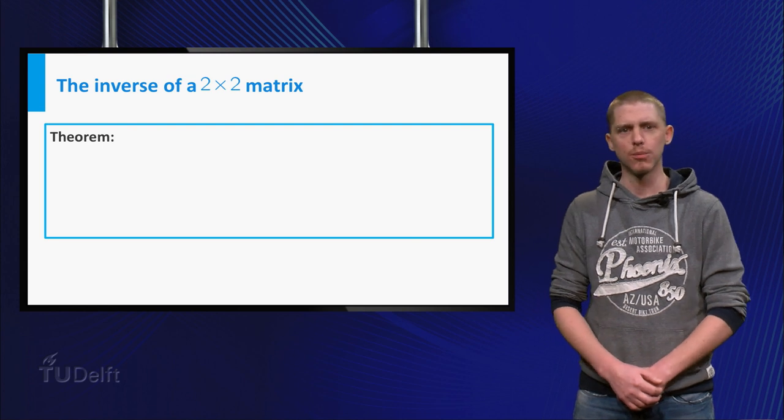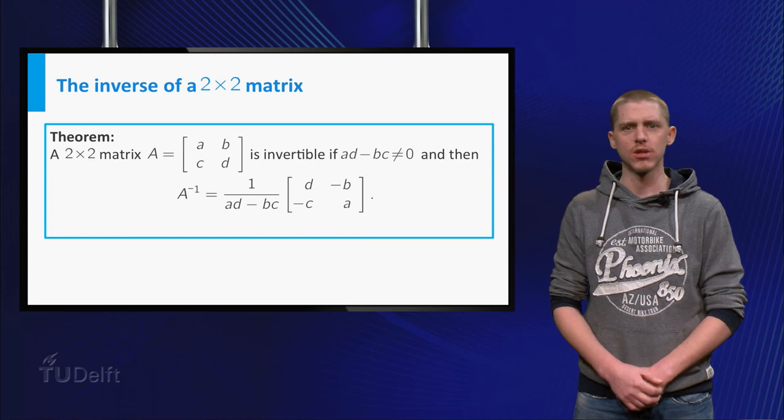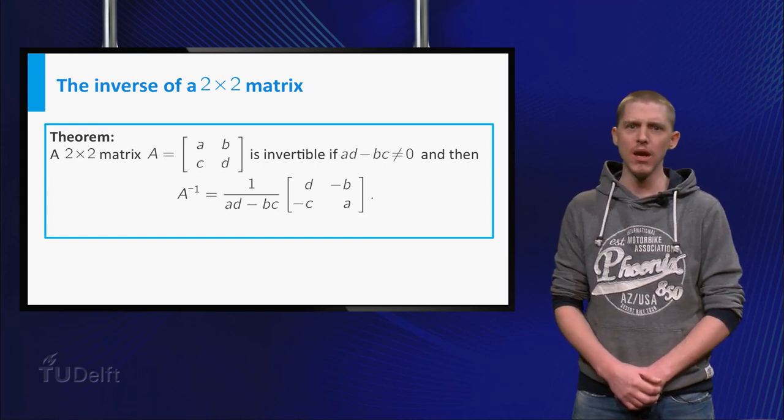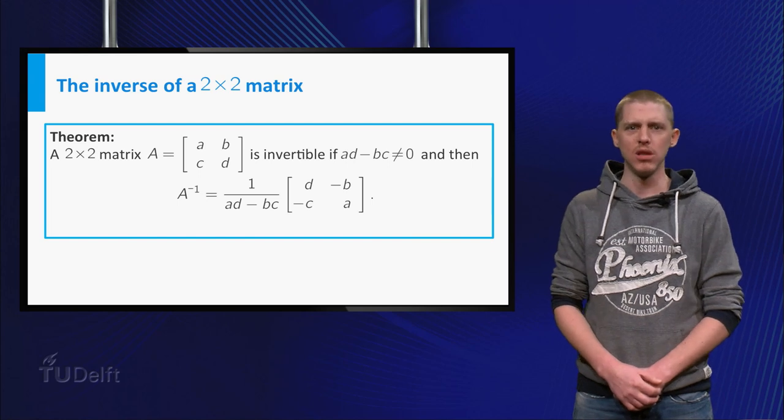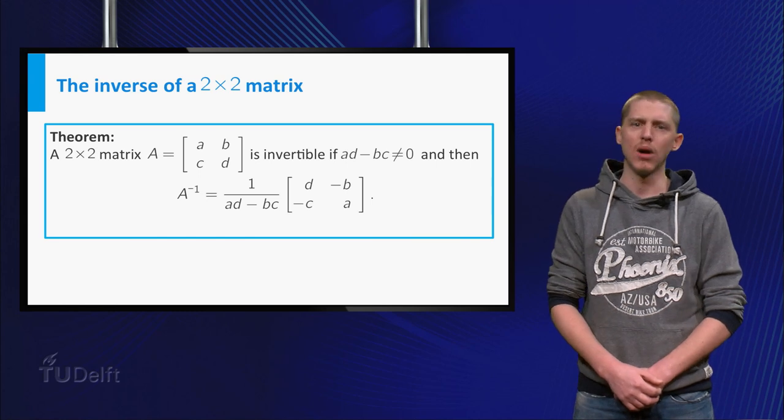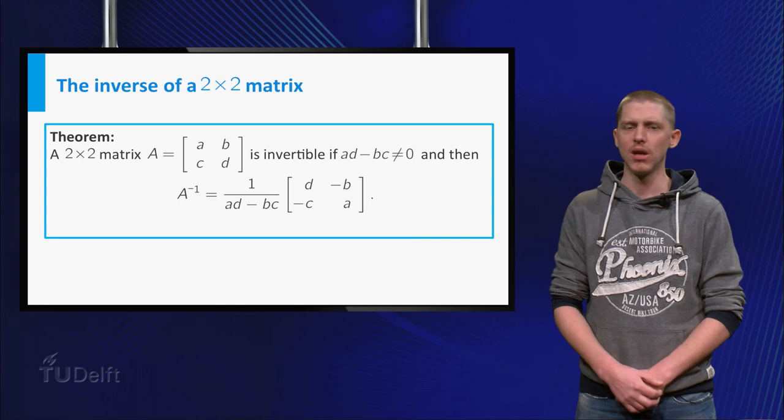We can formulate the result from previous manipulations as a theorem. A 2 by 2 matrix A given by a, b, c, d is invertible if a times d minus b times c is unequal to zero and has inverse 1 over a times d minus b times c times d, minus b, minus c, a.